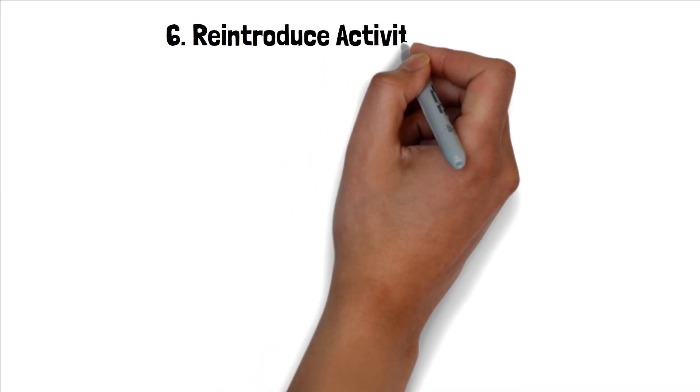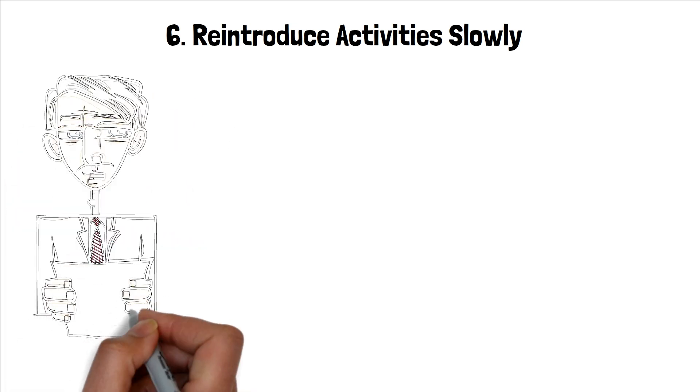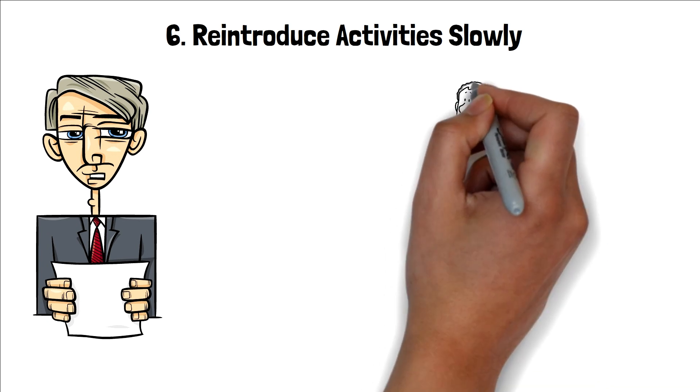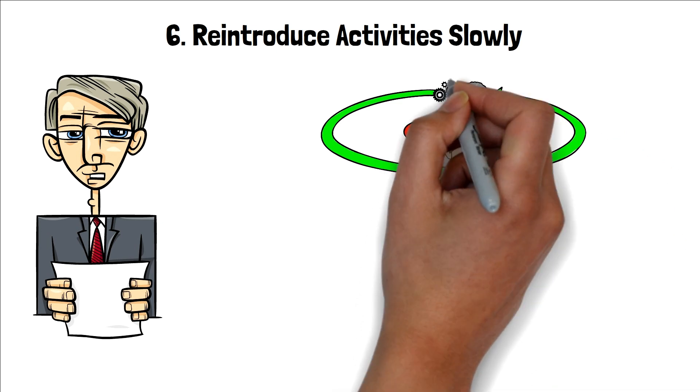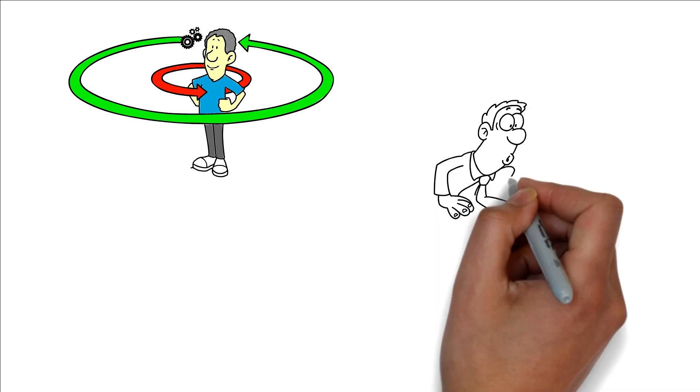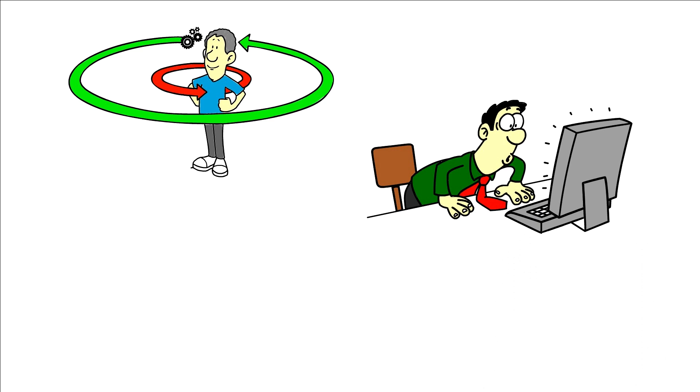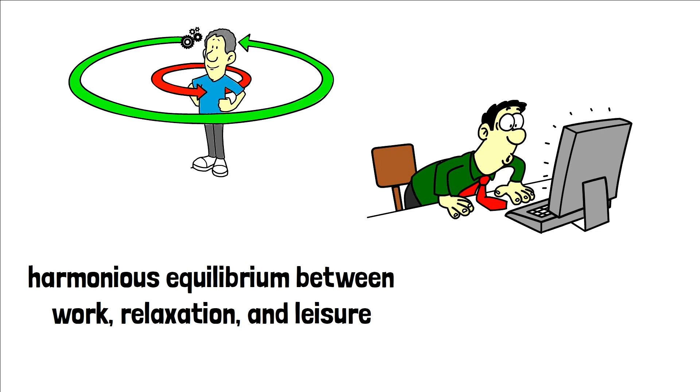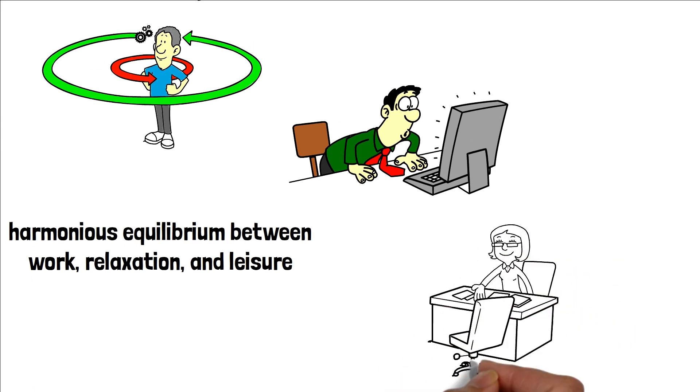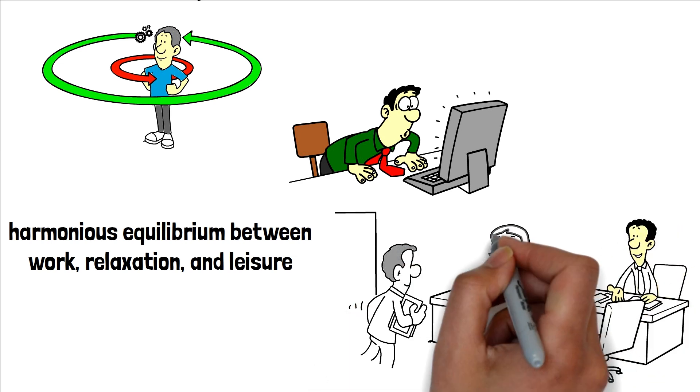6. Reintroduce activities slowly. Post-detox, it's crucial to cautiously reintegrate your standard activities, emphasizing mindfulness in each choice. By doing so, you gain a clearer understanding of which actions genuinely elicit happiness and fulfillment, as opposed to those you unconsciously drift into. This discerning approach not only aids in the identification of joy-bringing tasks, but also facilitates the establishment of a harmonious equilibrium between work, relaxation, and leisure. Through this gradual reacquaintance with everyday routines, you empower yourself to make more intentional decisions, optimizing both productivity and well-being.